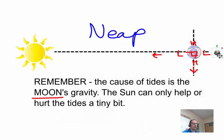Highest high tides, lowest low. 7 days later, now we're on this side. We're in a neap tide. Highest low tides, lowest high tides.